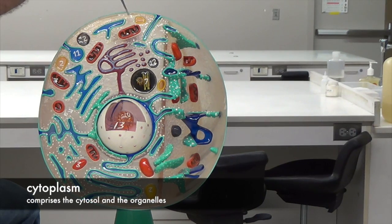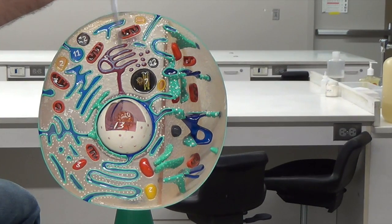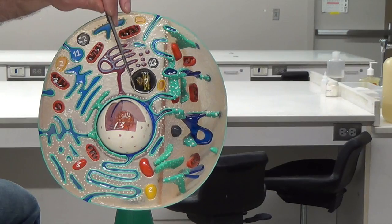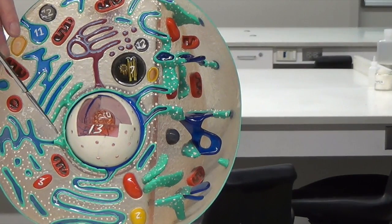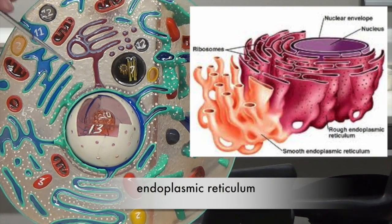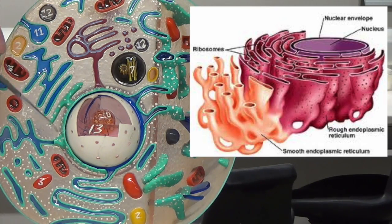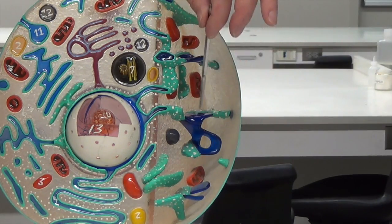The liquid portion of the cytoplasm is called the cytosol, and within the cytosol we have various organelles. Surrounding the nucleus and continuous with the nuclear membrane we have the endoplasmic reticulum. The white dots represent ribosomes — where ribosomes are on the endoplasmic reticulum, this is the rough ER. Where we can just see the endoplasmic reticulum without ribosomes, this is the smooth ER.